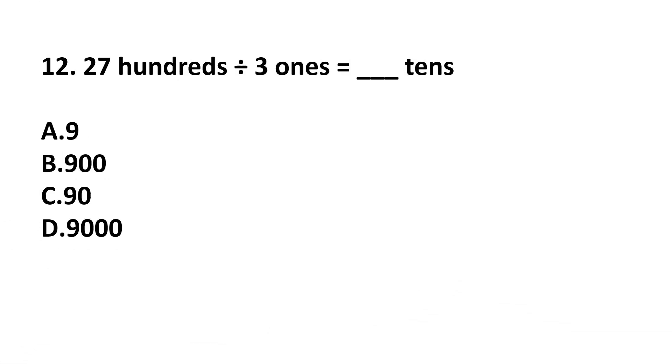Question number 12. 2700 divided by 3 1s equals dash 10s. 2700 is 2700 divided by 3 1s. So, if we divide 2700 divided by 3 1s equals 900, 3 9s are 27. So, this is 900. 900 is how many 10s? 900 is 90 10s. Our answer is option C, 90.